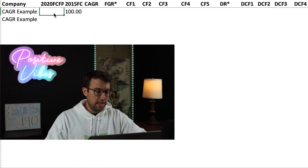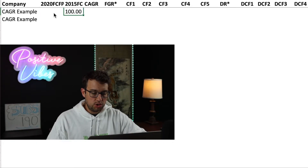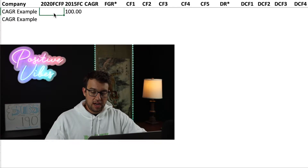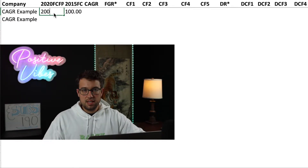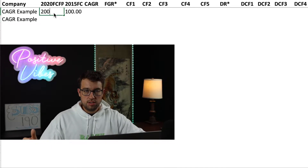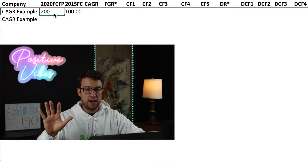Neither of these help you understand the concept any better. So now I'm going to slow it down just a little bit and teach you a simple explanation of compound annual growth rate. Imagine you had a company that had $100 in sales, and then five years later they had $200 in sales. Just guessing, what do you think the compound annual growth rate would be going from 100 to 200 over five years?